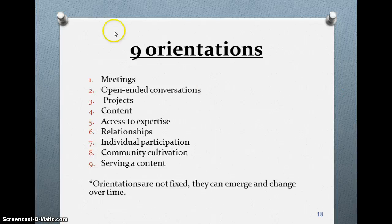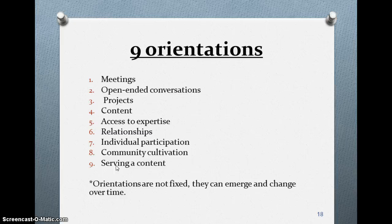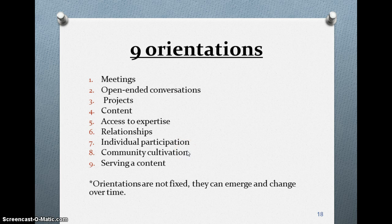There are nine main orientations: one, meetings; two, open-ended conversations; three, projects; four, content; five, access to expertise; six, relationships; seven, individual participation; eight, community cultivation; and nine, serving the content. When I looked at this — the chapter breaks down each orientation — it really made me reflect on our class. In our class, we have meetings, open-ended conversations in writing or voice threads or discussion boards, projects, content, access to expertise, relationships we build, individual participation, community cultivation, and serving content. Keep in mind these orientations aren't fixed — they can change and emerge into different things. Since the beginning of class, as we got to know each other, we've built on the orientations we had, and they can change over time.